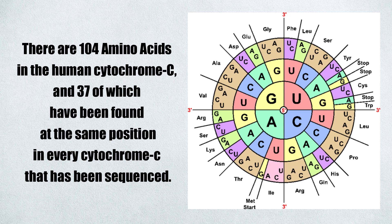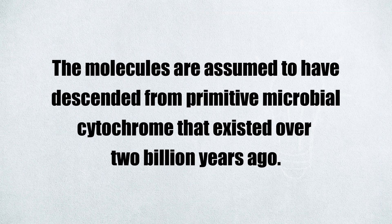There are 104 amino acids in the human cytochrome C, 37 of which have been found at the same position in every cytochrome C that has been sequenced. The molecules are assumed to have descended from a primitive microbial cytochrome that existed over 2 billion years ago.